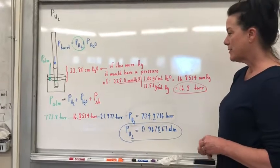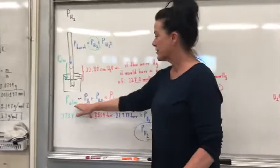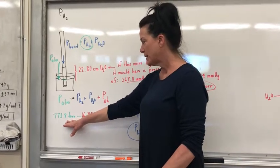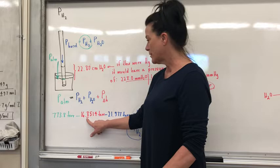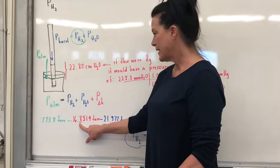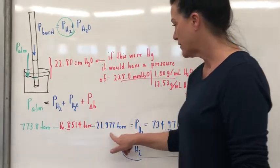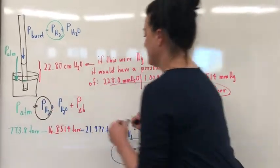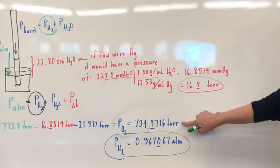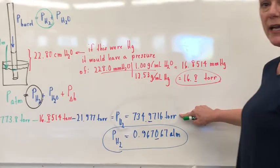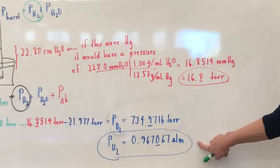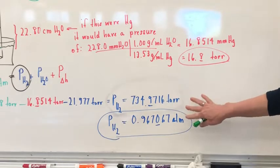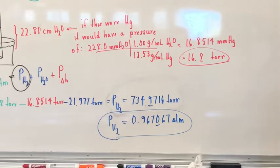Okay. So now, the atmospheric pressure right from the barometer was 773.8 torr, and I'm going to subtract the pressure due to the height of the column of water. And I'm also going to subtract the pressure of water to isolate the pressure that is just hydrogen. Once I find my pressure of hydrogen gas, then I need to convert to atmospheres because I'm using PV equals nRT. So that's how we do the pressure of hydrogen calculation.